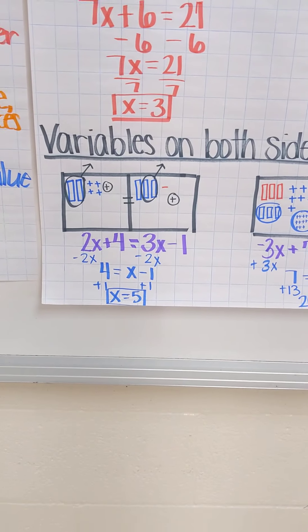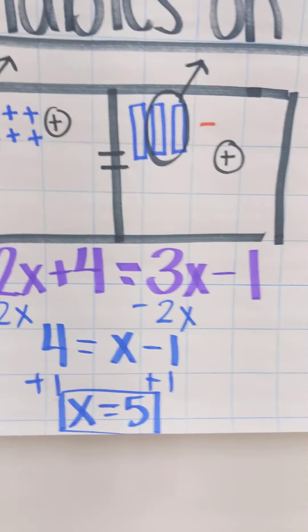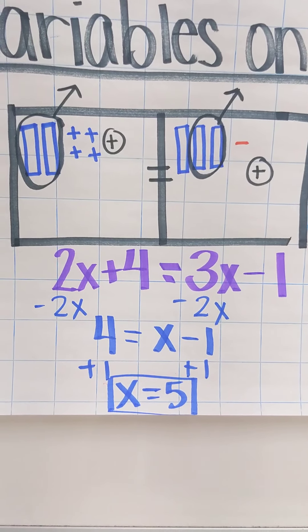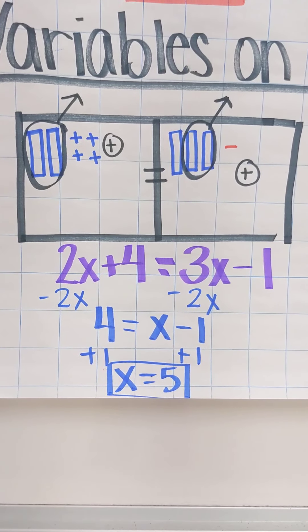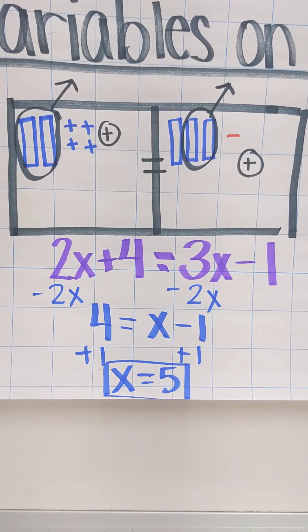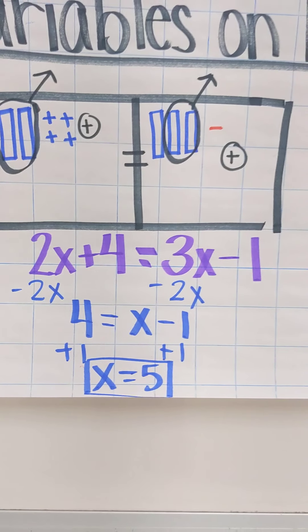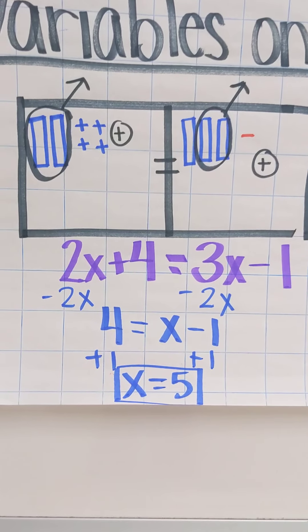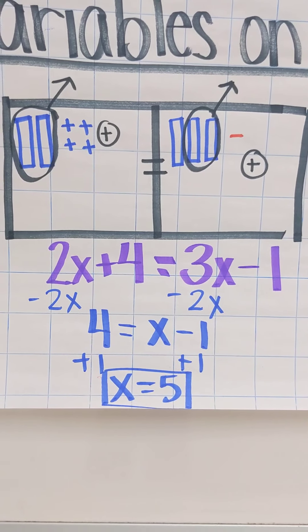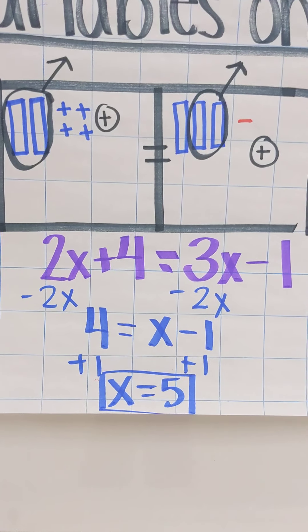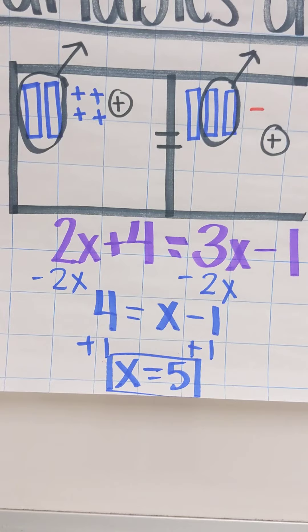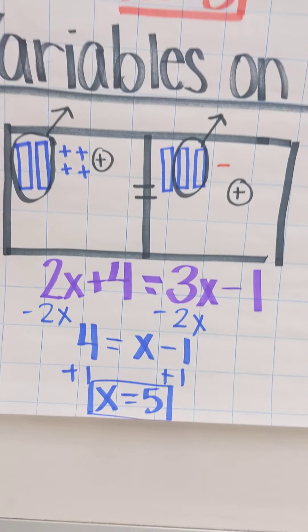Today, we took a look at variables on both sides. I'm going to zoom in just a little bit more so you can see the tiles. We were able to do, we have 2x on one side, 3x's on the other. We have a 4 and a minus 1. Understanding here that we can remove the thing that has, when there's x's on one side, x's on the other, we can get rid of those. And they were able to work through them.